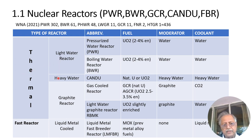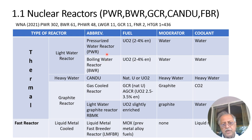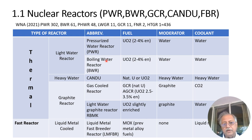In the thermal group, we have light water reactors, heavy water reactors, and graphite reactors. The two main light water reactors are the PWR and the boiling water reactor. Both use uranium dioxide fuel enriched to 2–4%, moderated and cooled by light water. The term pressurized in PWR stands for high pressure — 2250 psi — which allows water to operate up to 285°C without boiling, giving good thermal efficiency. Boiling water reactors allow boiling and operate at lower pressure.